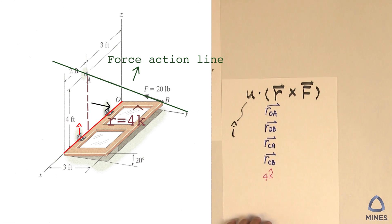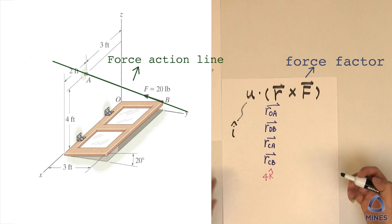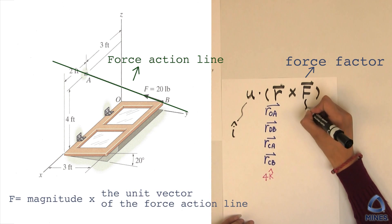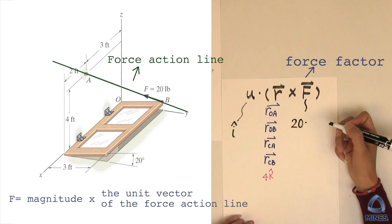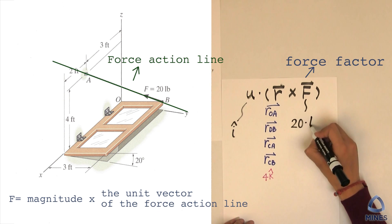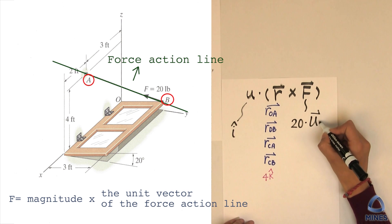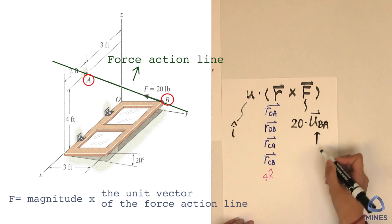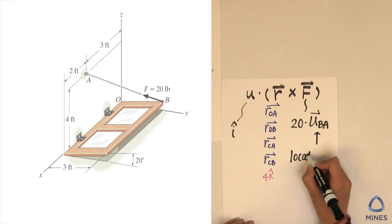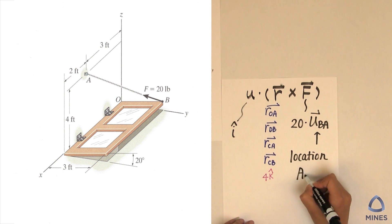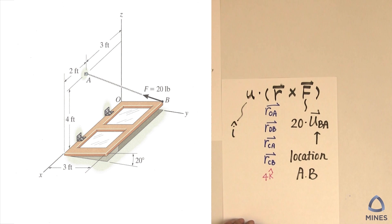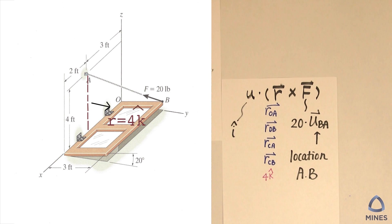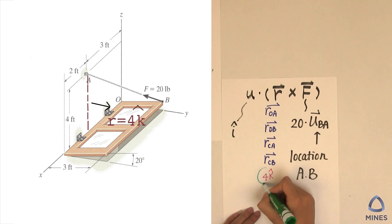Now the last thing we have to do is find out what is the force vector. We know the magnitude, so it will be magnitude multiplied by the unit vector of the force's line of action. The unit vector will be in the BA direction. In order to find out the unit vector of BA we have to find out the location of A and B. For this problem I am going to choose the pink line as my r.